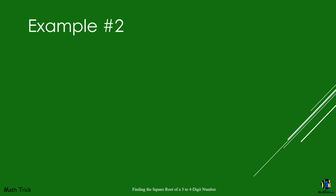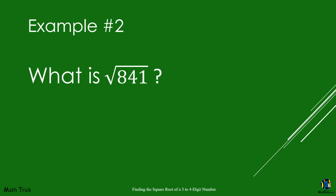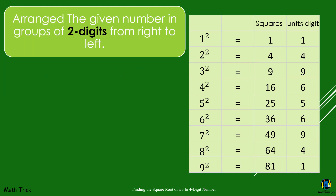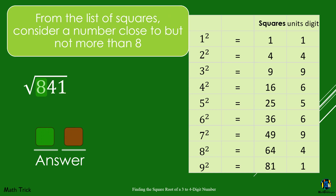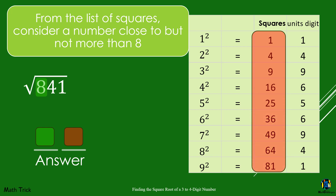Example number 2: What is the square root of 841? We have 2 groups, so we expect our answer to be a 2-digit number. Let's focus on the first part on the left. From the list of squares, consider a number close to but not more than 8. 4 and 9 are close to 8, but 9 is more than 8, so we choose 4 and take its square root, which is 2.